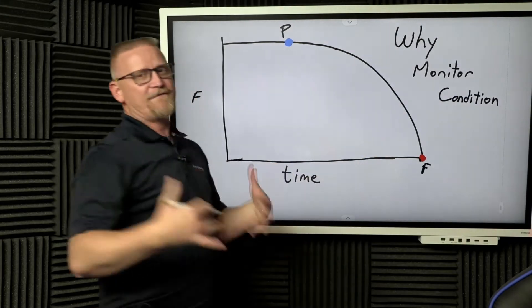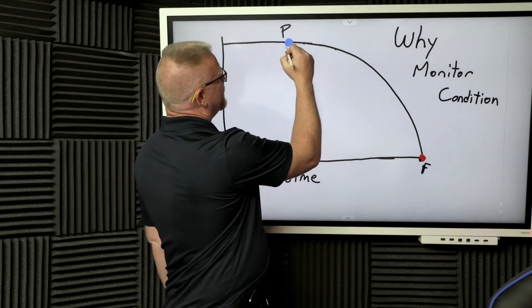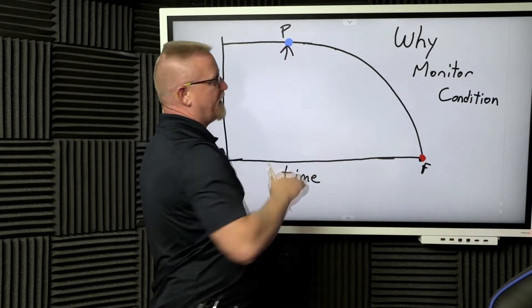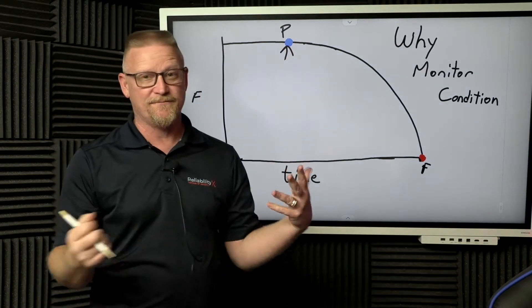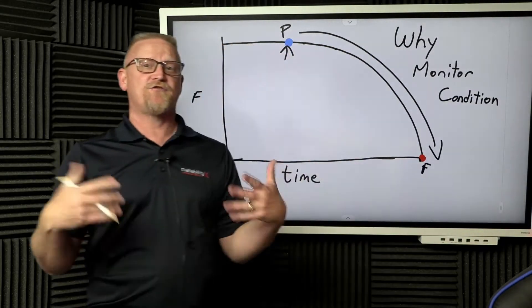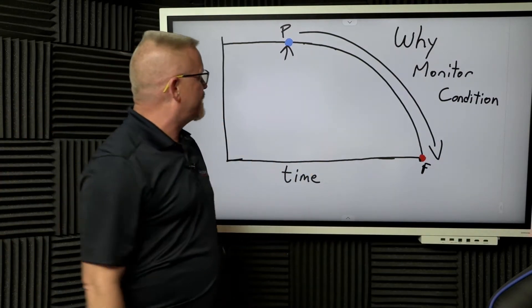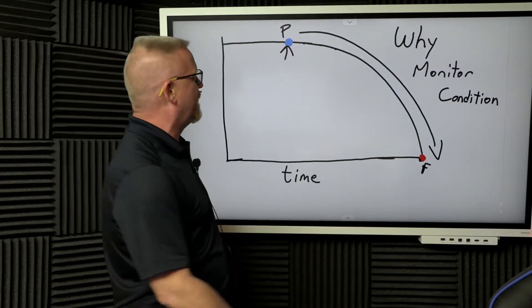This is our PF interval or PF curve. It is the point in time from when a potential catastrophic event is going to occur, meaning I put some dirt in my bearing, all the way until such time that the catastrophic event happens where I blow apart the bearing, drop my shaft on a pillow block, score the pillow block, and destroy a bunch of equipment.